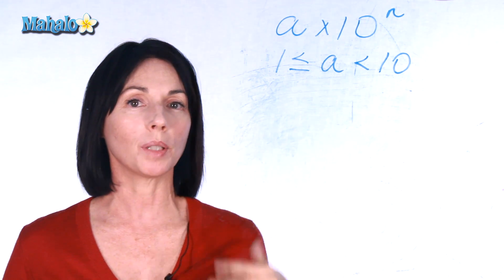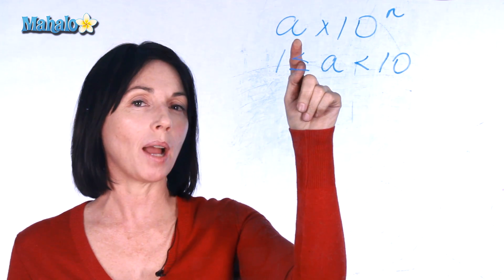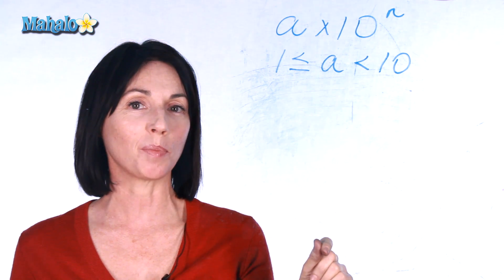Now, that might seem kind of confusing, but there's a good reason for it. If a is ten or greater, it means you have an extra power of ten here that you could get rid of and put into the exponent.